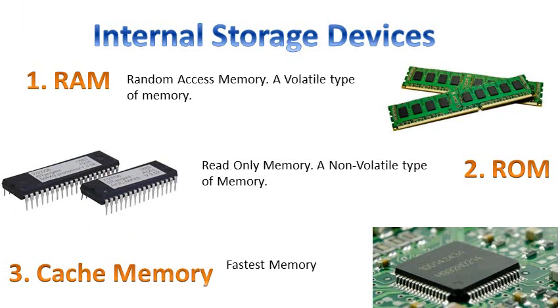RAM is a temporary type of memory. If the power goes off, the data stored in RAM gets erased. It is a volatile memory.